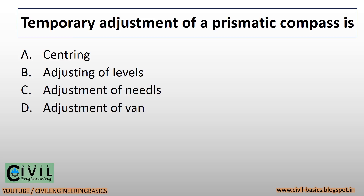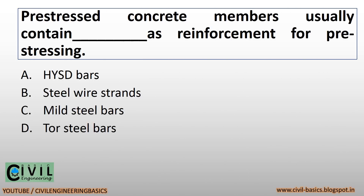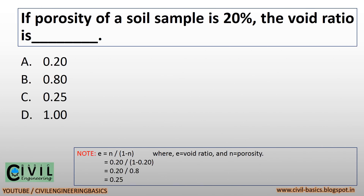Temporary adjustment of a prismatic compass is centering. Pre-stressed concrete members usually contain steel wire strands as reinforcement for pre-stressing. If porosity of a soil sample is 20%, the void ratio is 0.25.